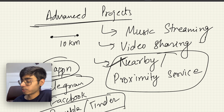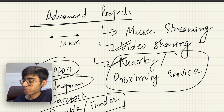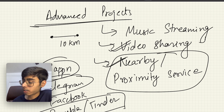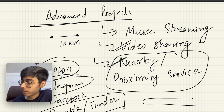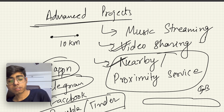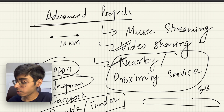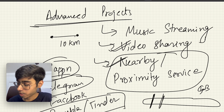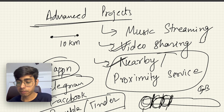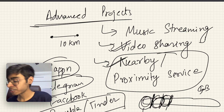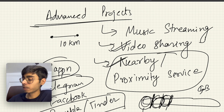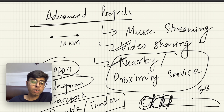For Video Sharing, you need to understand how to divide a video into chunks, because a complete video can be several GBs — you can't pass the whole file to a client device at once. You send it in chunks sequentially. The same principle applies to Music Streaming, where audio is also streamed in chunks rather than transferred as a complete file.